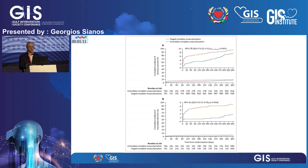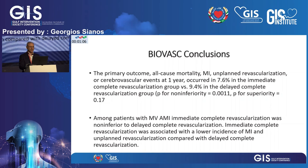The BIOVASC trial found that immediate complete revascularization was non-inferior to staged complete revascularization for both primary and secondary endpoints. Numerically, the primary outcome occurred in 7.6% of the immediate group versus 9.4% in the delayed group, but this difference did not reach statistical significance. The conclusion was that immediate complete revascularization is non-inferior to delayed complete revascularization in multivessel ACS patients.